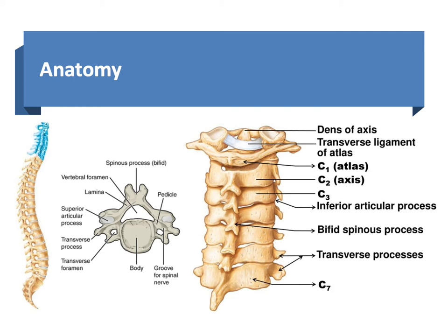The second vertebrae, C2, is also known as the axis, and it's characterized by an anterior process known as the odontoid or dens that protrudes upwards from its vertebral body into the ring of C1. The anterior surface of the dens articulates with the posterior surface of the anterior arch of C1 and is held in place by different ligaments.